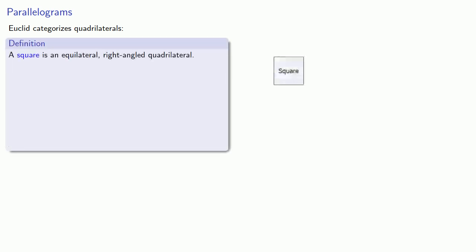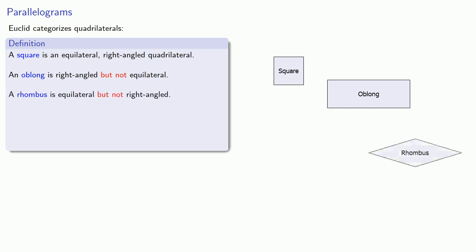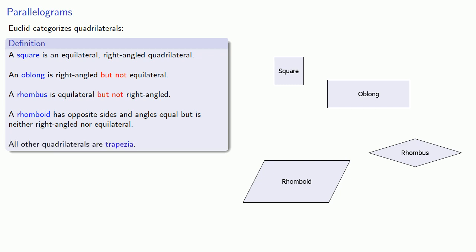How about parallelograms? Euclid categorizes quadrilaterals in the following way. A square is an equilateral, right-angled quadrilateral. An oblong is right-angled, but not equilateral. A rhombus is equilateral, but not right-angled. A rhomboid has opposite sides and angles equal, but is neither right-angled nor equilateral. And all other quadrilaterals are trapezia.